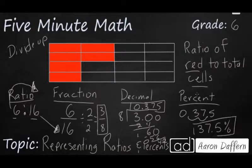So this particular figure here can be represented as a ratio of 6 to 16, as a fraction of 3 eighths, as a decimal of 0.375, and as a percent of 37.5%. They all represent this particular figure.